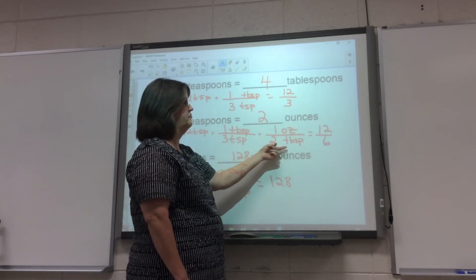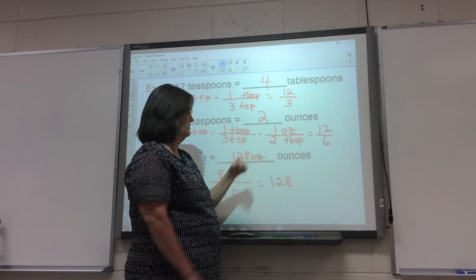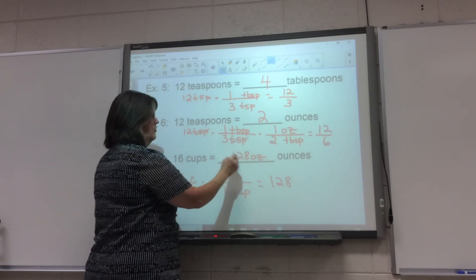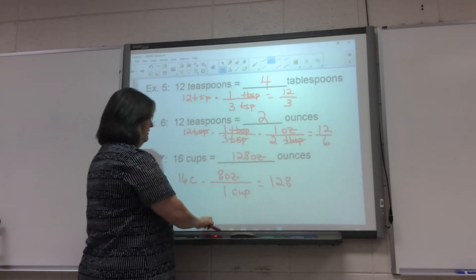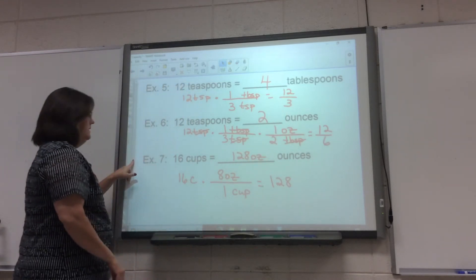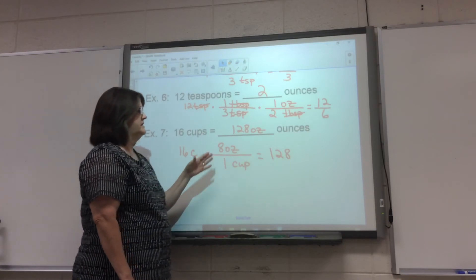All of these are going to go away, and I have 12 over six which is two ounces. All right, 16 cups, how many ounces is in that? Well, cups cancels and 16 times eight is 128 ounces.